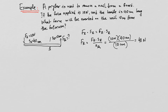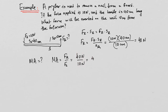We can also calculate the mechanical advantage of this lever. MA equals the resistance force divided by the effort force: 40 newtons divided by 10 newtons equals 4. This is bigger than 1, confirming the calculation is correct, and has no units. Using the other definition, MA equals effort distance divided by resistance distance: 40 cm divided by 10 cm, which also equals 4.